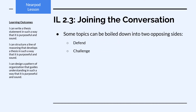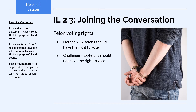Some topics can be boiled down into just two opposing sides — a side that defends the particular topic and a side that challenges it. For instance, in the issue of felon voting rights, we could break this down into a defend proposition and a challenge proposition. The defend proposition would be that ex-felons should have the right to vote, and the challenge proposition would be that ex-felons should not have the right to vote.